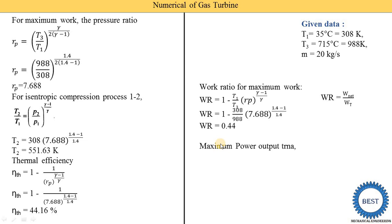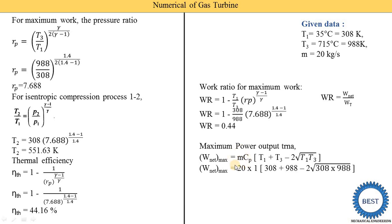The last quantity is the maximum power output, W_net_max. The equation is: W_net_max = m * Cp * (T1 + T3 − 2 * sqrt(T1 * T3)). Substituting m = 20 kg/s, Cp = 1 kJ/kg·K, T1 = 308 K, and T3 = 988 K, we calculate and get maximum power output = 3854.49 kilowatts.